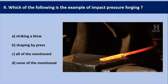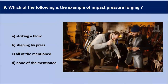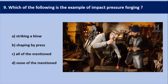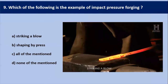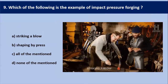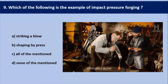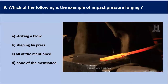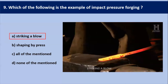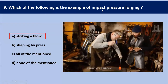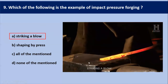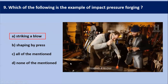Which of the following is an example of impact pressure forging? Striking a blow is an example of impact pressure, and shaping by a press is an example of press forging. That's why striking a blow is an example of impact pressure — as shown in this diagram, the person is giving a blow over the heated metal.